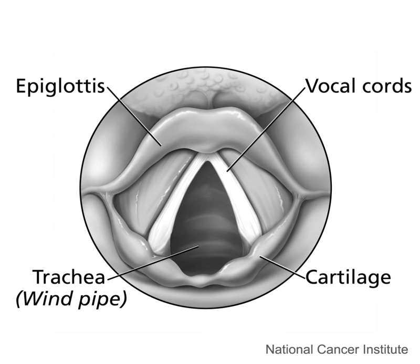Other positions of the glottis, such as breathy and creaky voice, are used in a number of languages, like Jalapa Mazatec, to contrast phonemes, while in other languages, like English, they exist allophonically. Phonation types are modeled on a continuum of glottal states from completely open to completely closed (glottal stop). The optimal position for vibration, and the phonation type most used in speech, modal voice, exists in the middle of these two extremes. If the glottis is slightly wider, breathy voice occurs, while bringing the vocal folds closer together results in creaky voice.